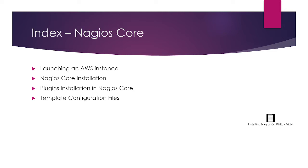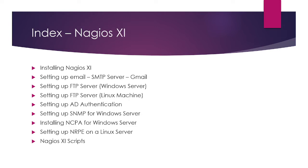We'll also cover template configuration files. In Nagios XI, we are going to see: installing Nagios XI, setting up email, setting up FTP server on Windows server, setting up FTP server on Linux machine, setting up AD authentication, setting up SNMP for Windows server, installing NCPA for Windows server, setting up NCPA on the next server, and Nagios XI scripts along with recommended steps.